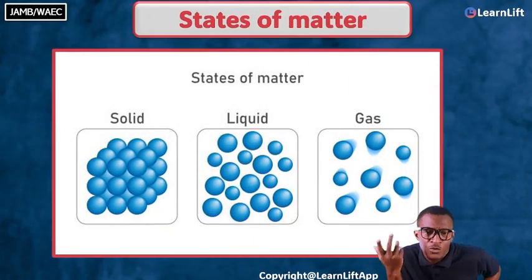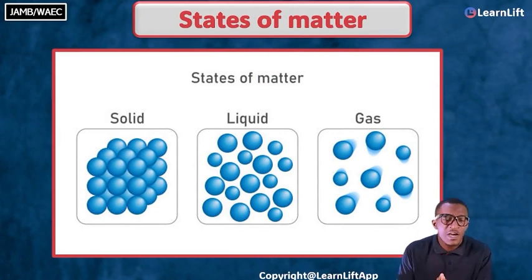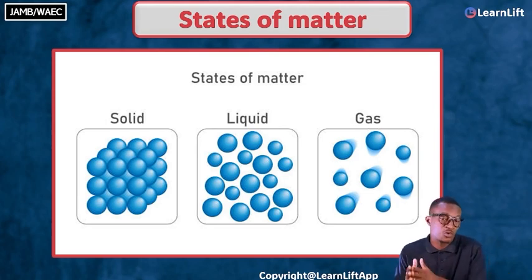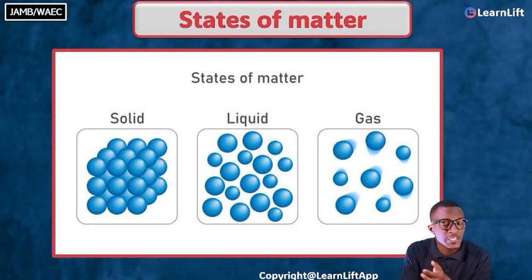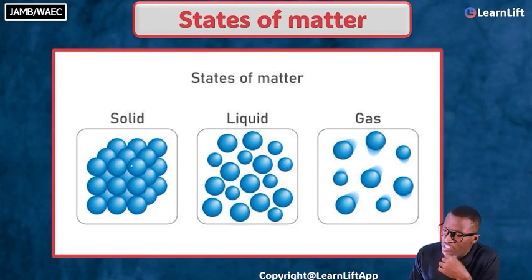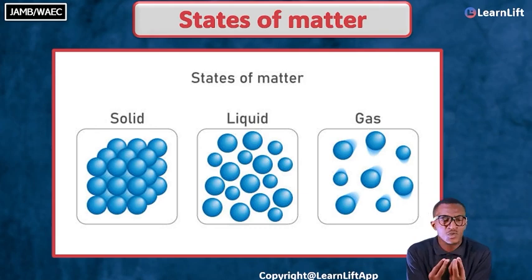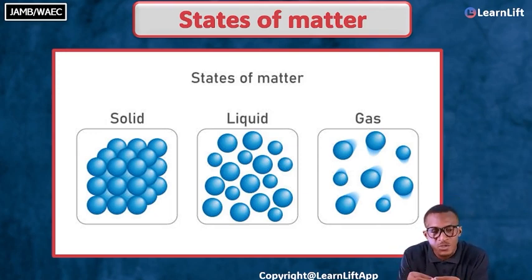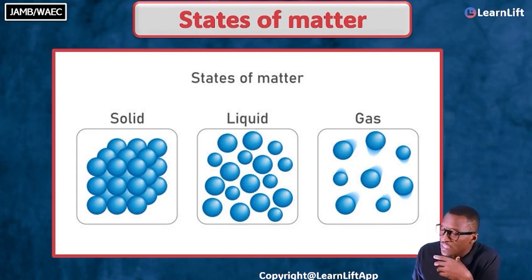What is the cause of expansion? All eyes on the diagram — we have three states of matter. Matter has the tendency to increase in size due to increase in temperature. In solids, the molecules that make up solid are tightly fixed together, so the movement of molecules in solid is rare because of the strong bond between them.